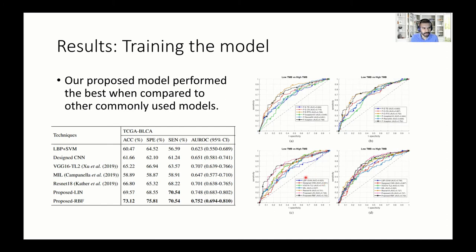Our proposed model performed well compared to other approaches. We tried different convolutional neural networks common in other areas like ResNet-18 and VGG-16, a published multiple instance learning method for tissue digital pathology, a locally designed CNN, and applying local binary pattern features directly to the SVM. The best performance was achieved without representative tile selection; however, that had high computational cost. When we applied representative tile selection, we only dropped around 0.02 on the AUC.